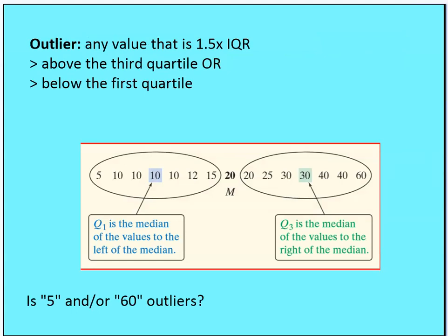Now let's talk about outliers. An outlier is any value that is one and a half times the IQR either above the third quartile or below the first quartile. There's a bit of math we need to use with this graphical approach. My question to you is: is 5 an outlier, and/or is 60 an outlier? Given that definition, pause the video, do the calculations, and you should have an answer when you come back.